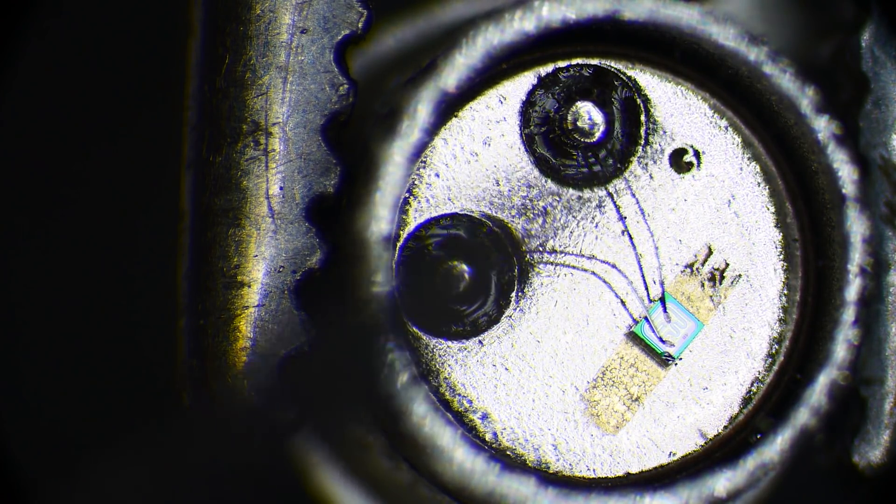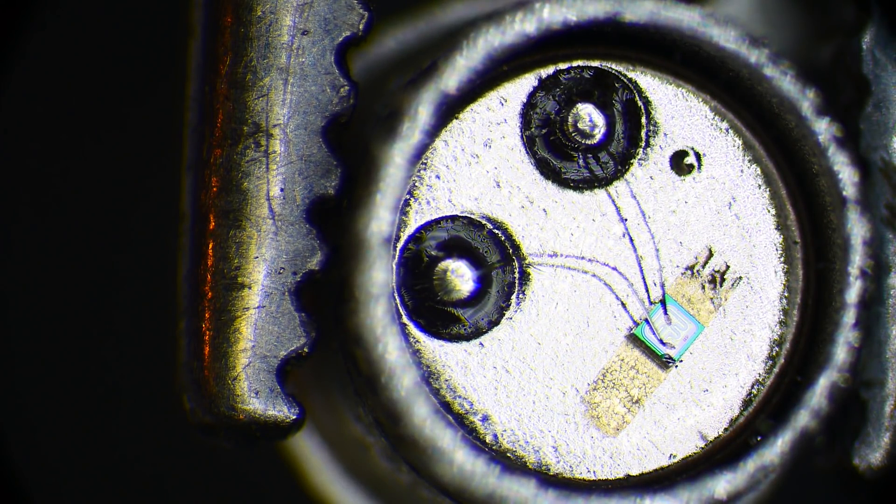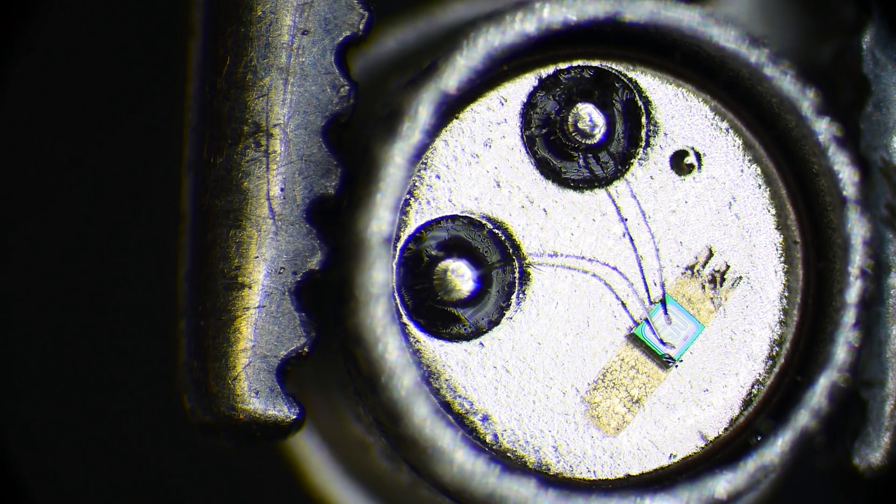Those are the leads that are sticking out of the can. And the third lead of the can is just grounded, so it's the actual case of the can.